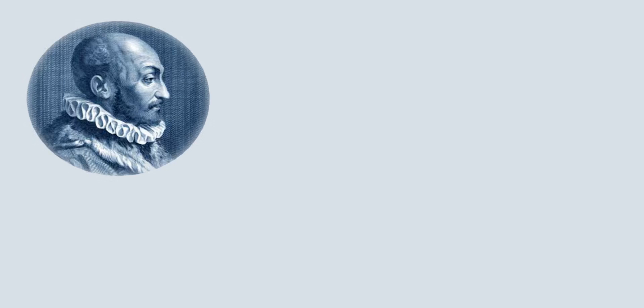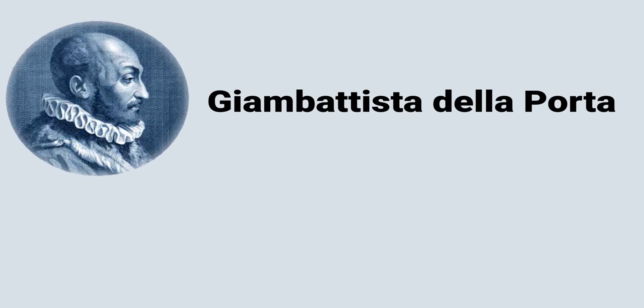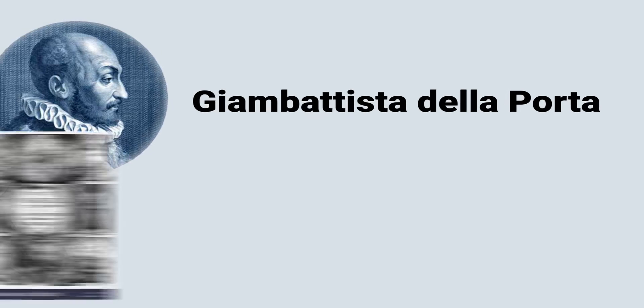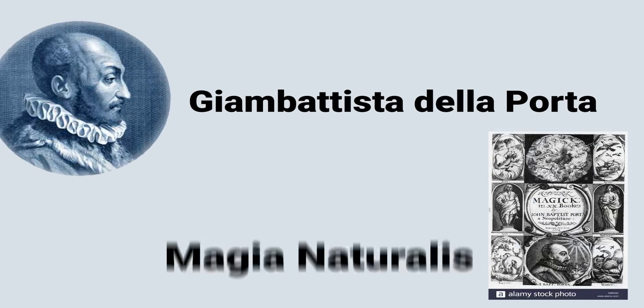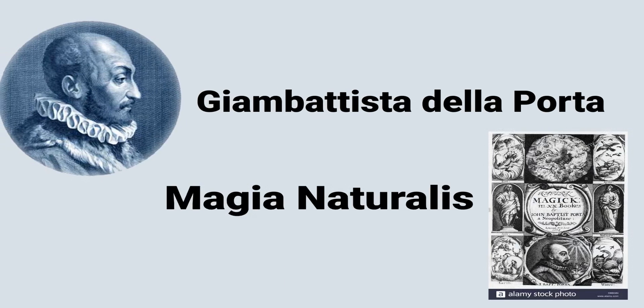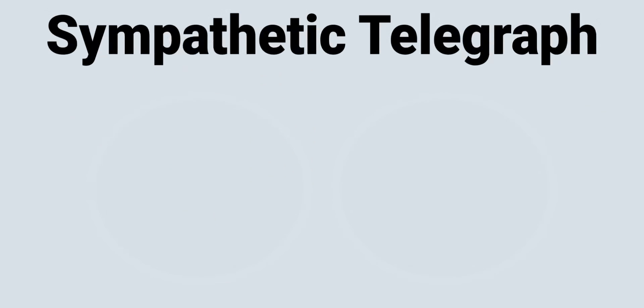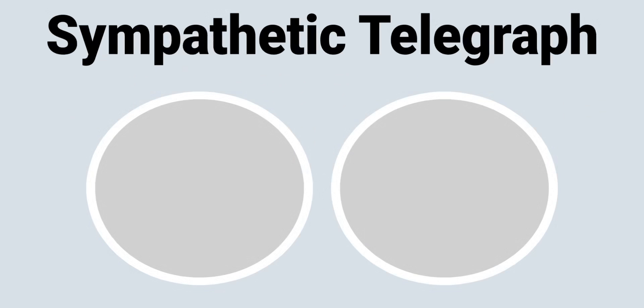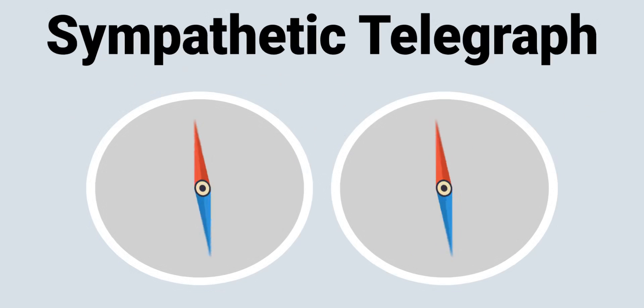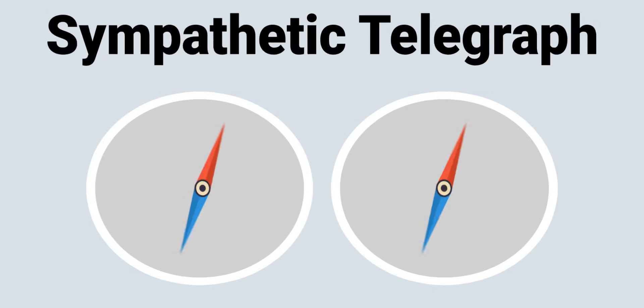In 1558, Giambattista della Porta mentioned an imaginary device in his book, Magia Naturalis, also known as Natural Magic. This device, known as the Sympathetic Telegraph, consisted of two circular boxes, each with a magnetic needle, just like a magnetic compass.